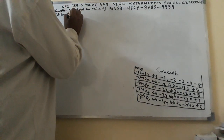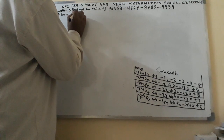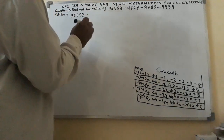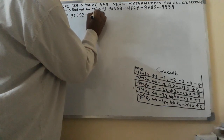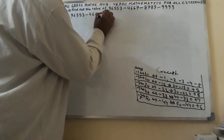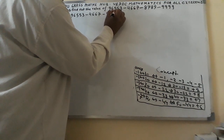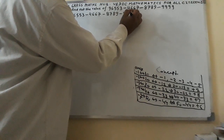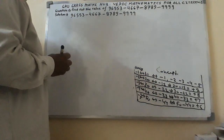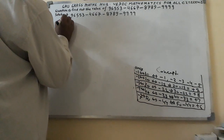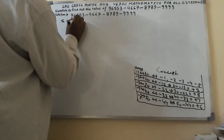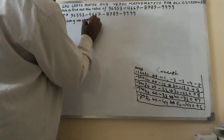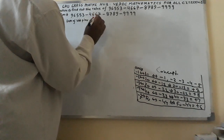Here I shall write 96,553 minus 4,667 minus 8,789 minus 9,999. The sum of units place digits — this is the procedure we shall follow.